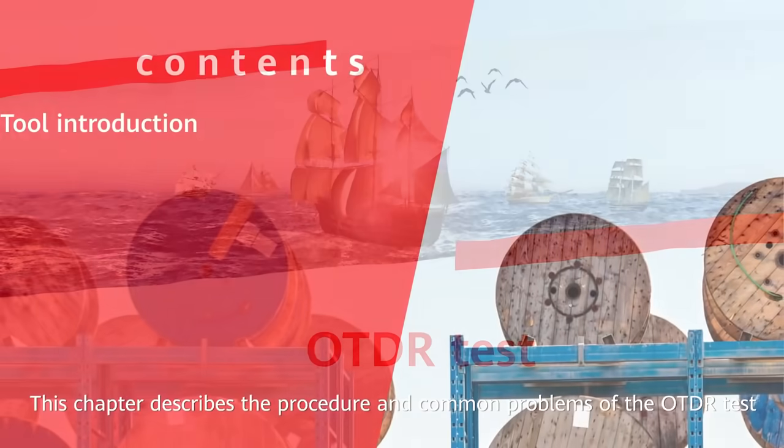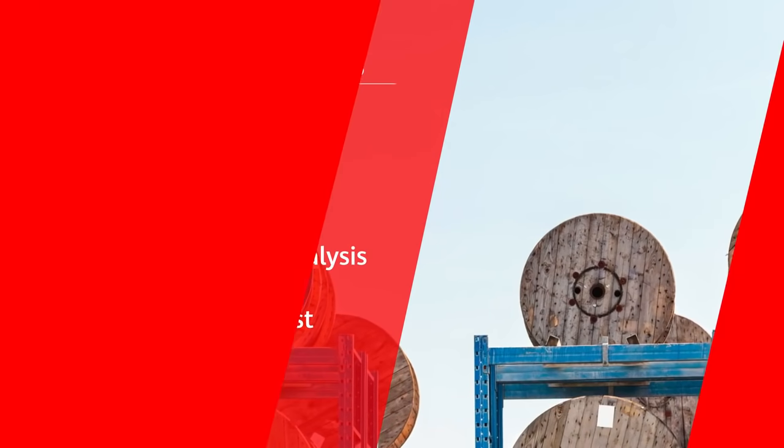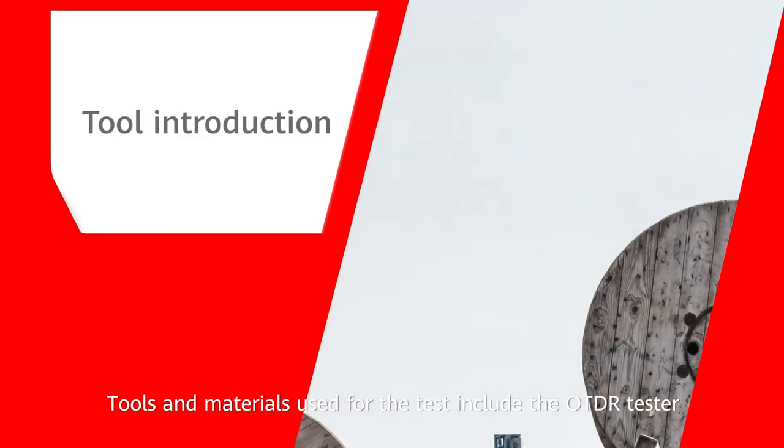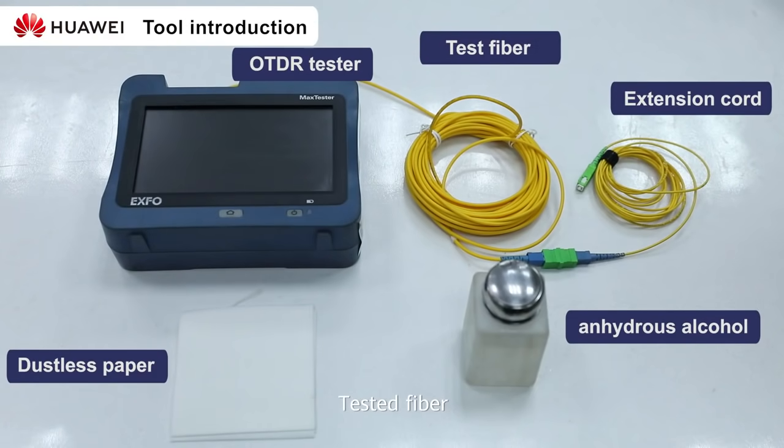This chapter describes the procedure and common problems of the OTDR test. Tools and materials used for the test include the OTDR tester, test fiber, dust-free paper and alcohol.